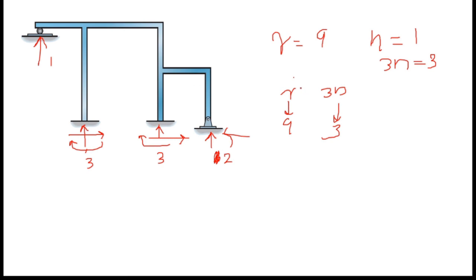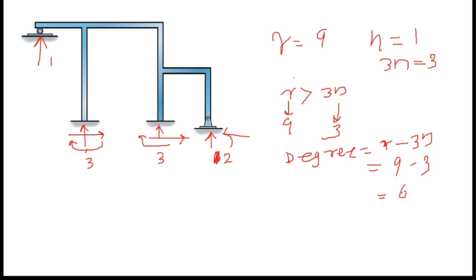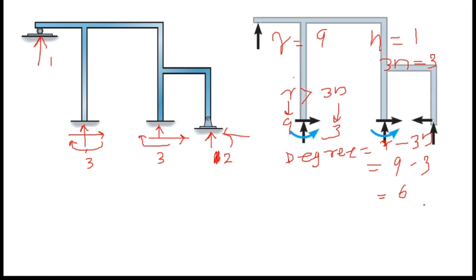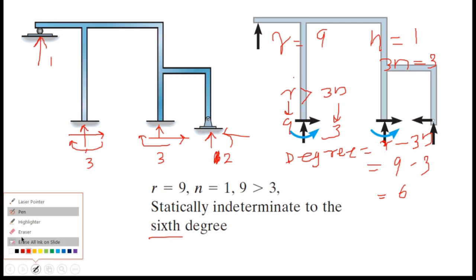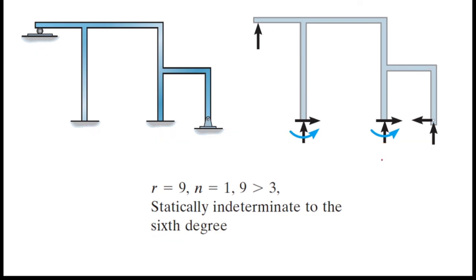Comparing r and 3n: r equals 9 and 3n equals 3. Since r is greater than 3n, the structure is statically indeterminate. The degree equals r minus 3n, which is 9 minus 3 equals 6. So this structure is statically indeterminate to the sixth degree. This is the free body diagram and this is the final answer.